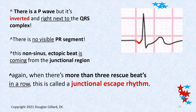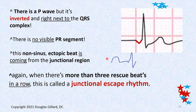The P wave is upside down. Where is the PR segment? The PR interval is P wave plus the PR segment; the PR interval ends once the Q wave starts — or the upstroke of the R wave if there's no Q wave. The PR segment should be that flat line right there — it's gone. So we have another sign of an ectopic beat: you don't see the PR segment.